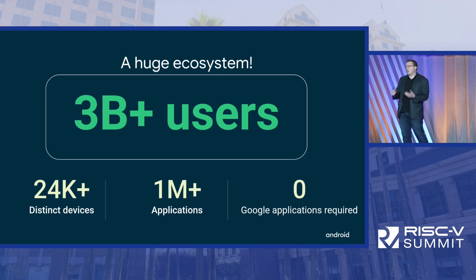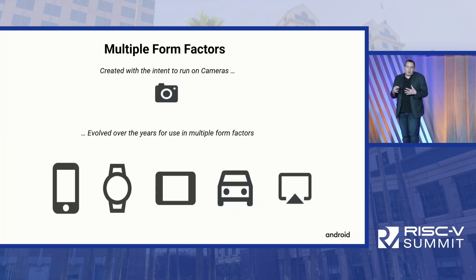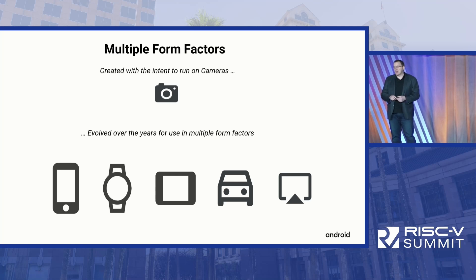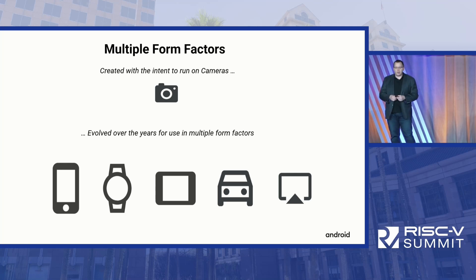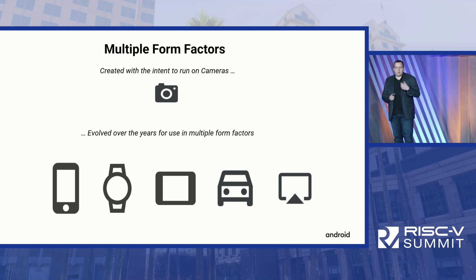There's no requirement to have any of the Google applications when you use the Android open source project. It's freely available for anyone to take and use with their devices. An operating system that was originally designed to run on cameras, but is most widely known for running on phones, has grown to a number of different form factors. We've got it on wearables, on tablets, in car infotainment systems, and there's also streaming support to broadcast the screen from your Android device to other surfaces.